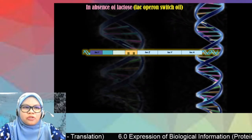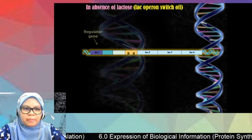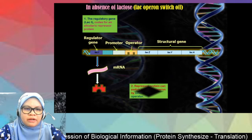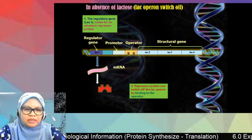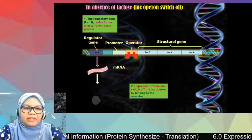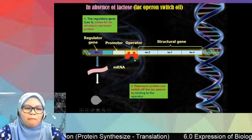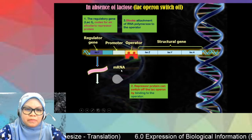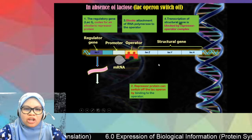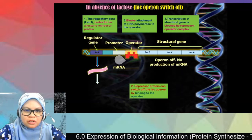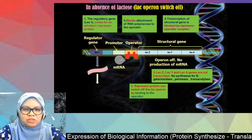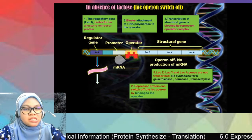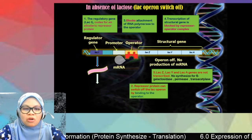To recap: when lactose is absent, the regulator gene codes for repressor protein, the repressor protein binds to the operator, blocking RNA polymerase from binding to the promoter. RNA polymerase cannot transcribe the structural genes, so no mRNA is produced and all three enzymes — beta-galactosidase, permease, and transacetylase — are not synthesized.